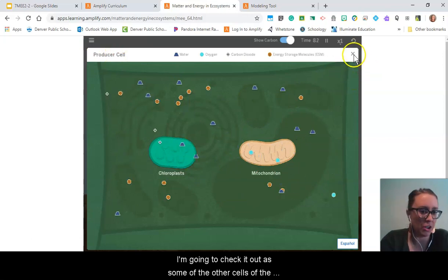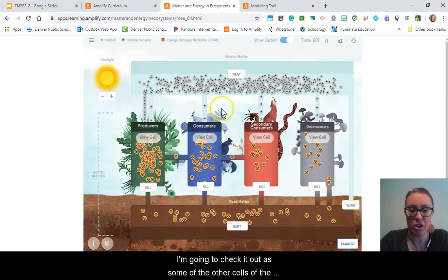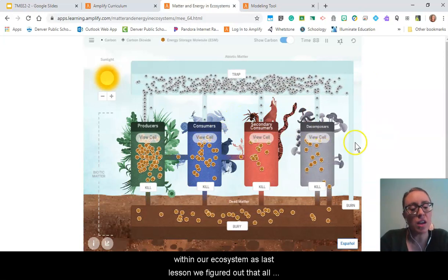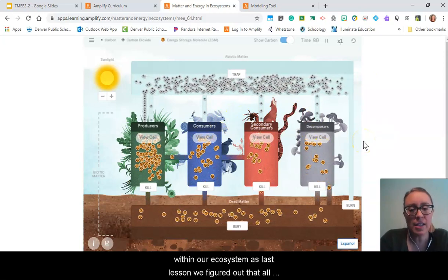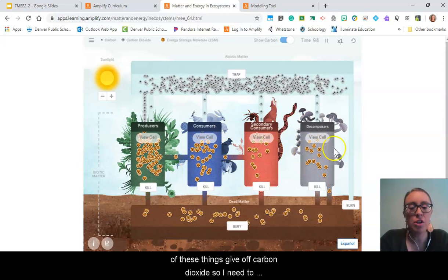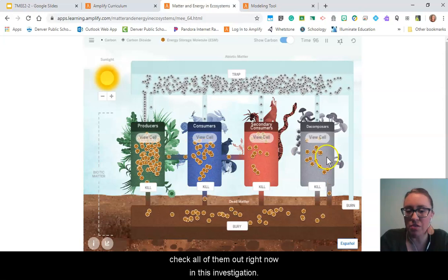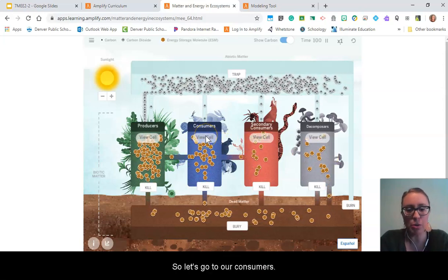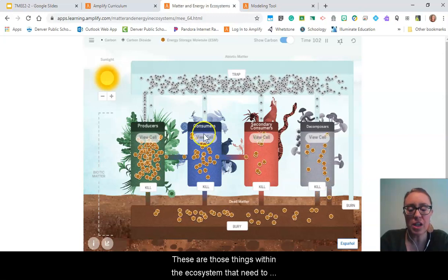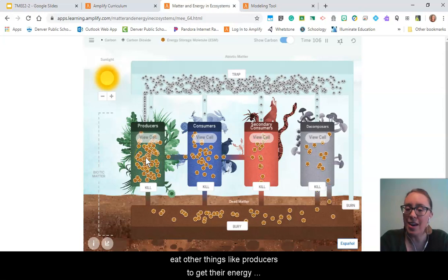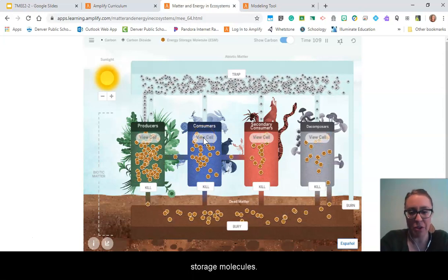I've spent some time observing this mitochondrion here in a producer cell. I'm going to check it out in some of the other cells of the other living things, the other biotic things within our ecosystem. As last lesson, we figured out that all of these things give off carbon dioxide. So I need to check all of them out right now in this investigation. Let's go to our consumers. These are those things within the ecosystem that need to eat other things like producers to get their energy storage molecules.